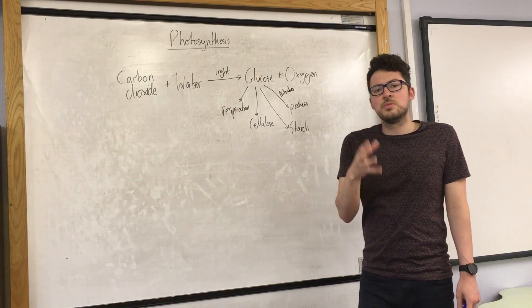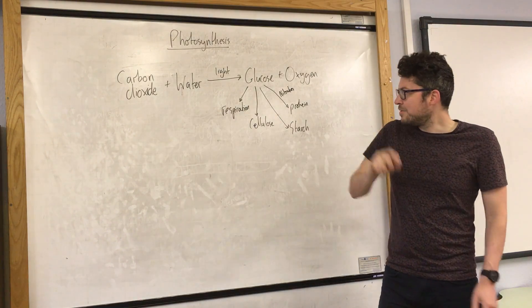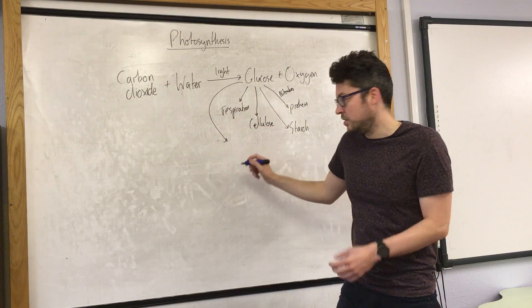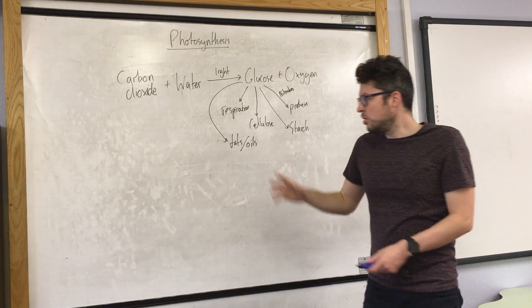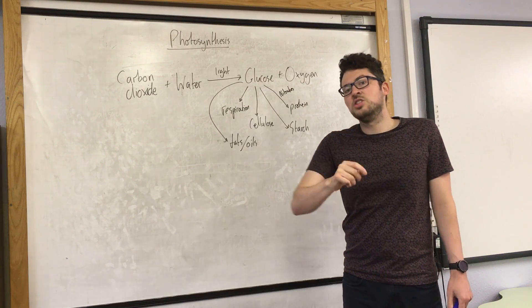Finally, glucose can be converted to fats and oils. Fats and oils are used in seeds to provide energy for germination.